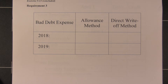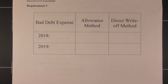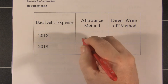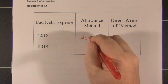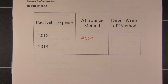Exercise 513 part 3 asks us to compare and contrast the allowance method with the direct write-off method with regard to bad debt expense. Under the allowance method in 2018, we would have $4,650 — computed at 15% of the $3,100.